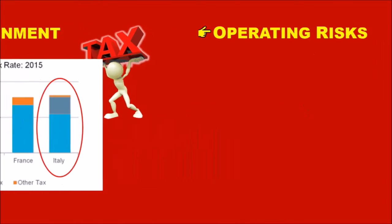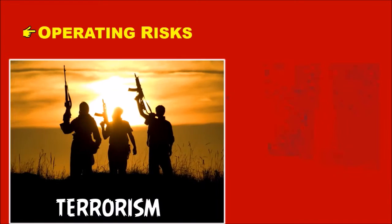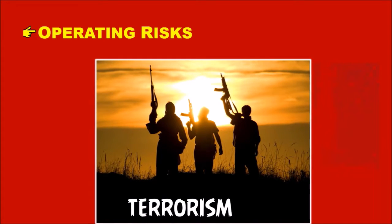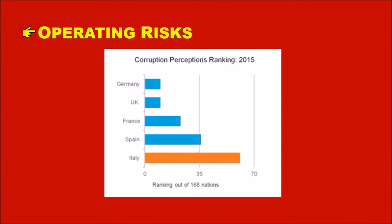The second factor is operating risks. Corruption and terrorism are the two major problems for Italy. A chart showing the corruption perception ranking for 2015 indicates that Italy received one of the highest rankings among the countries compared.